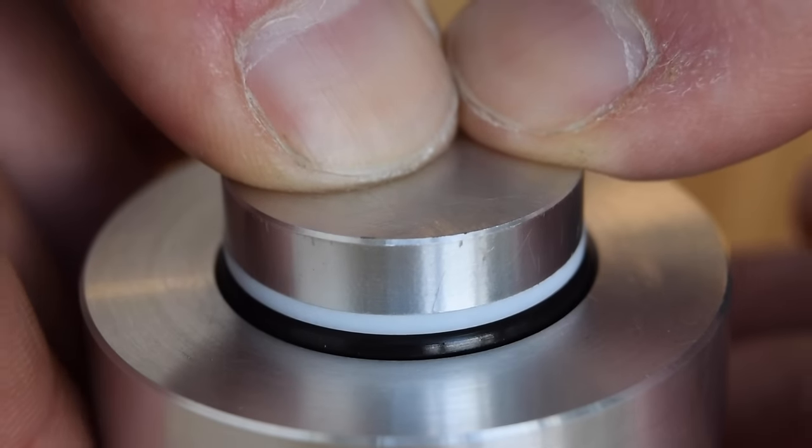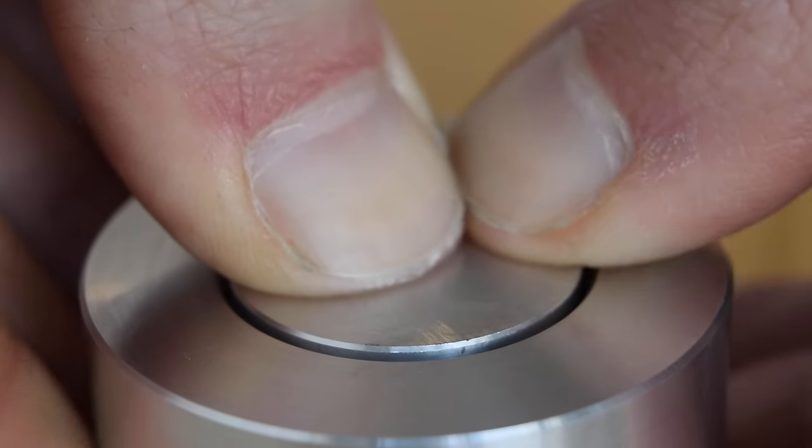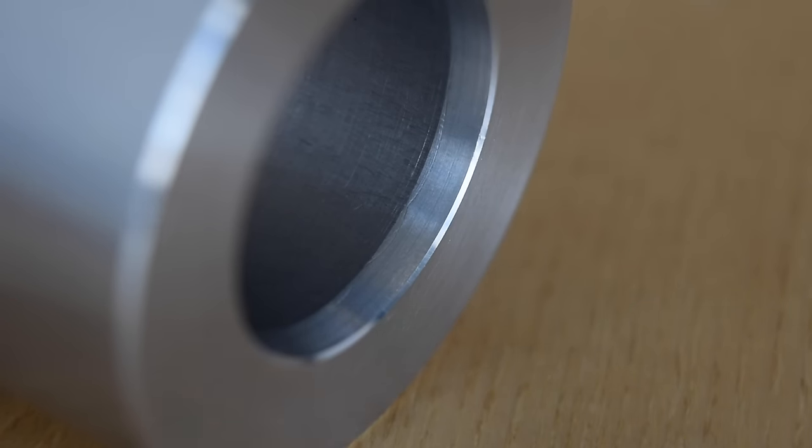When you assemble the components, you need to squeeze the O-ring quite a bit to create a seal. It helps to have a shallow entry angle of about 15 degrees. This surface should be totally smooth and free of burrs so that the ring isn't inadvertently cut.